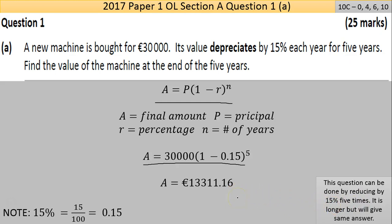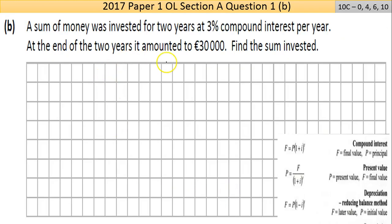Now Part B here: A sum of money was invested for two years at 3% compound interest per year. At the end of the two years it amounted to €30,000. Find the sum invested. There's your three pieces of information.